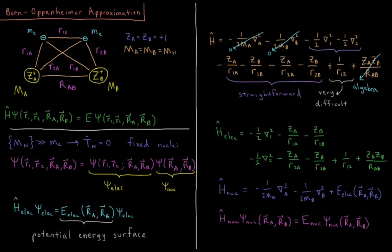We have six pairs of charged particles that interact through the Coulomb potential. Their distances are R1a, R1b, R2a, R2b — the distances from electrons to nuclei, which attract each other. R12 is the electron-electron distance (repulsion), and R_ab is the internuclear distance (repulsion).